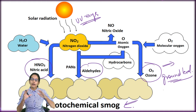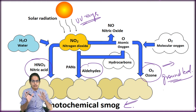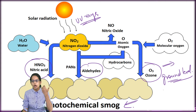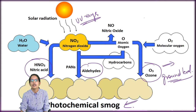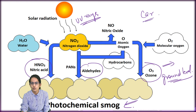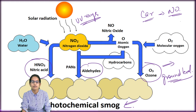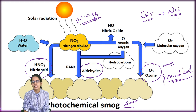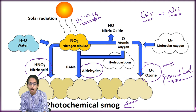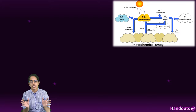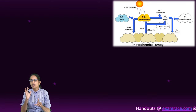In the early morning hours, people start driving or commuting to work. As they commute, car engines exhaust nitrous oxides and nitric oxides into the atmosphere. These react with the atmospheric oxygen and create nitric acid, aldehydes, and free ozone, which affects the atmosphere and creates this hazy smog.